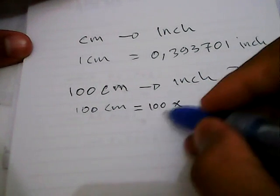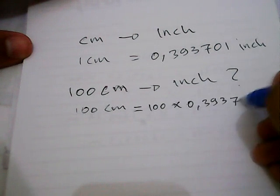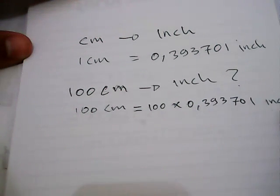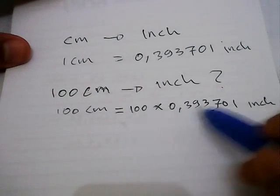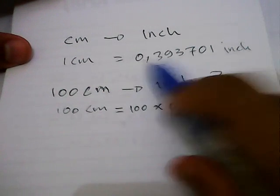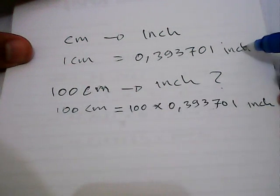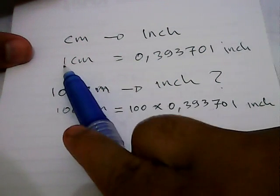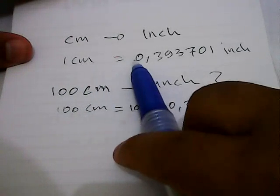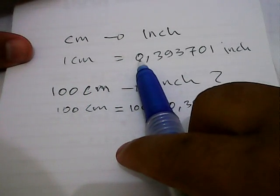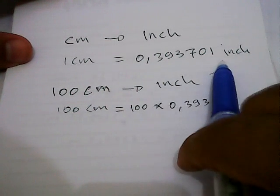We need to multiply 100 by this number. Why do we have to multiply 100 by this number? It's because we want to convert centimeters into inches. In this case, one centimeter equals one multiplied by this number, so we do